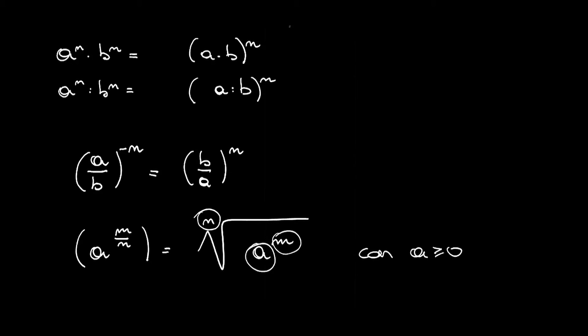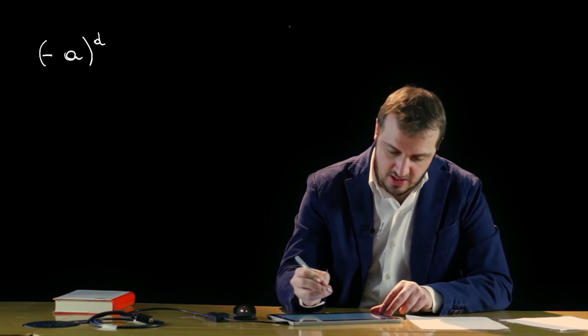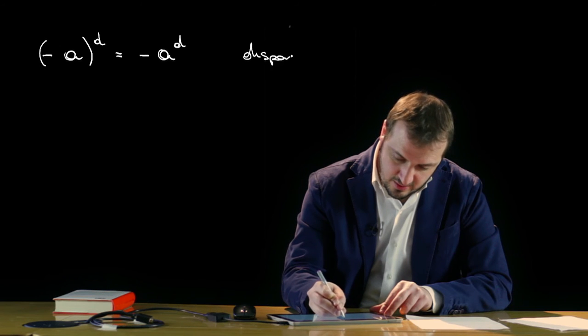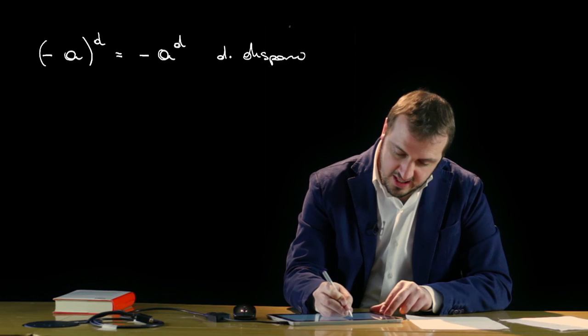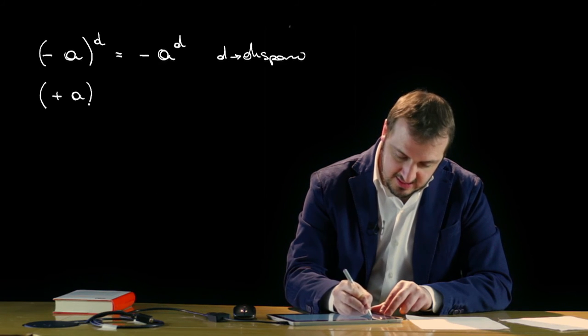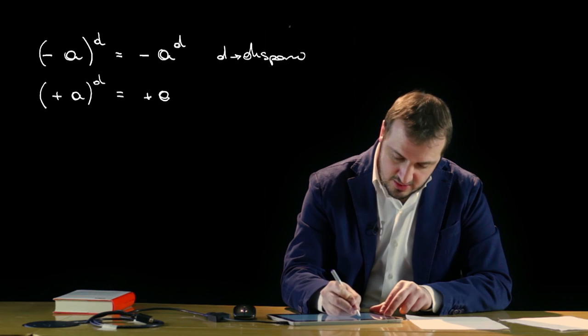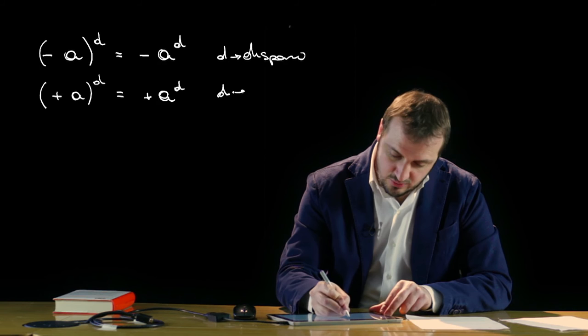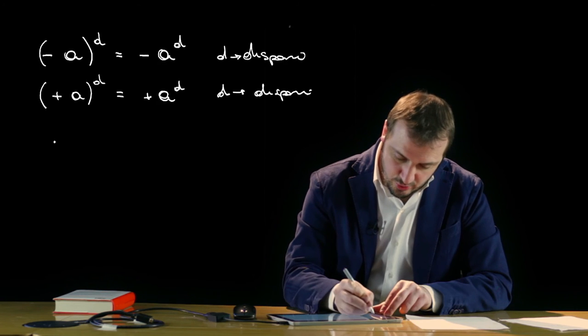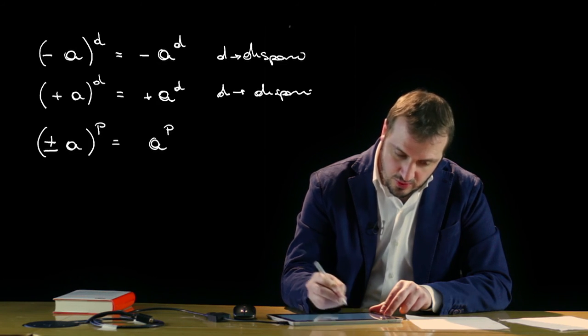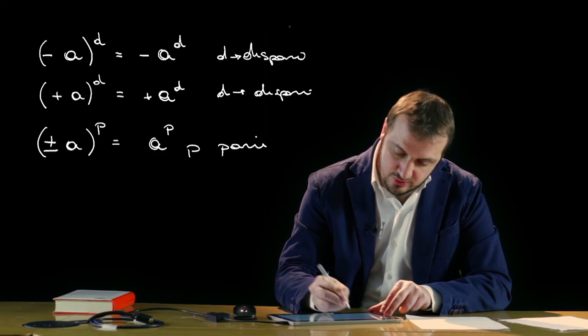L'ultima cosa riguarda il segno di una potenza: se l'esponente è un numero dispari e la base è negativa, abbiamo un mantenimento del segno della base, per cui il risultato darà luogo a un numero negativo. Se la base invece è positiva, il risultato sarà un numero positivo. Se invece l'esponente è un numero pari, sia che la base sia positiva o negativa, avremo come risultato sempre e comunque una quantità positiva.